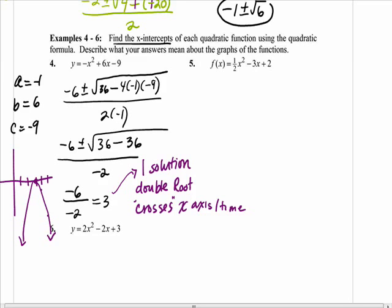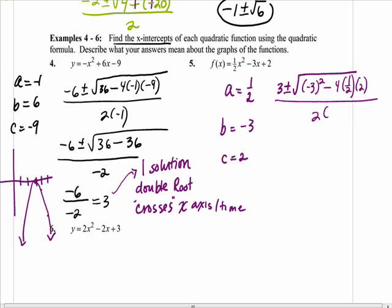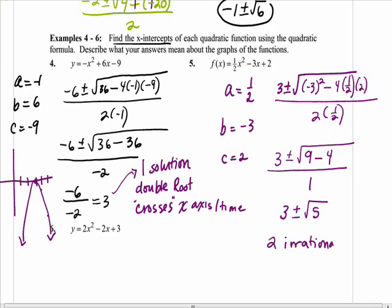Let's finish this up. A is 1 half, b is negative 3, c is 2. 4 times 1 half, so our fractions will go away. First term inside the radical will always be positive. 4 times 1 half is 2, 2 times 2 is 4. On the bottom, 2 times 1 half is just 1. So it's just 3 plus or minus root 5. What type of solutions are these, rational or irrational? Irrational. How many solutions are there? There's 2 irrational solutions.